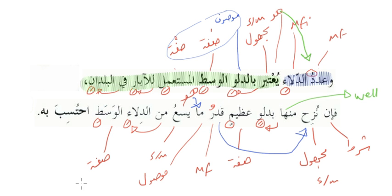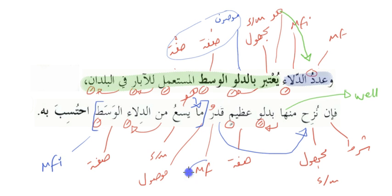من الدلاء — حرف الجر gives this a كسرة and then الوسط is given a كسرة because it is a صفة. All of this from here to here actually becomes the مضاف إليه of قدر, and then all of that together would be considered the نائب فاعل.